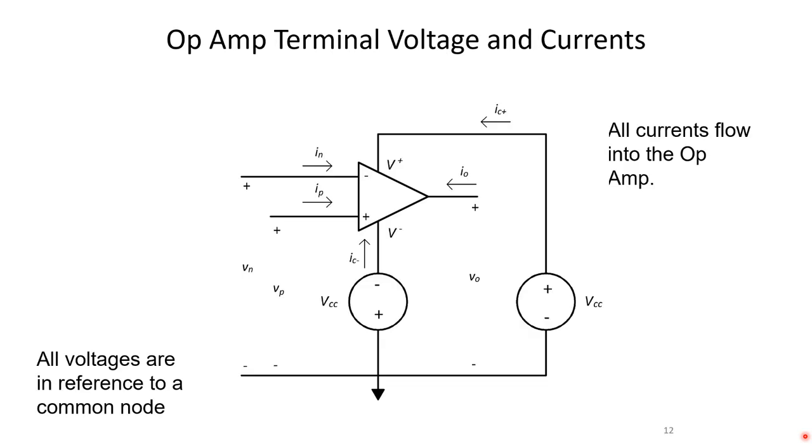For op amps, when we talk about op amps, all the voltages on an op amp are in reference to a common node or a ground. You see that drawn here with VN and VP, the negative input and the positive input. We have VCC plus and minus VCC. Notice that the power supplies are reversed. One's a negative voltage and one's a positive voltage.